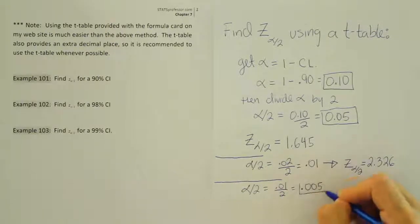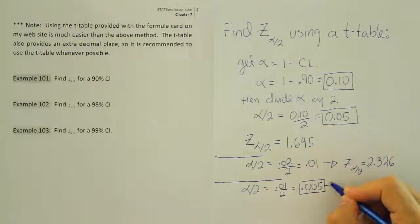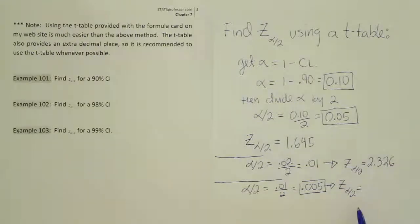that's 0.005. So we need to go to our table and look up 0.005, which will lead to our z alpha divided by 2 value.